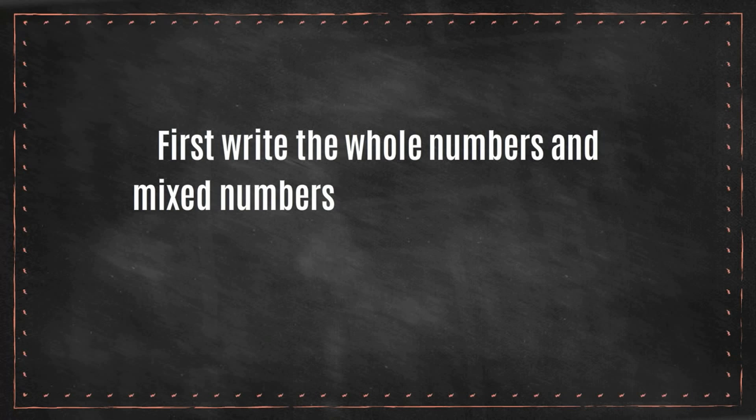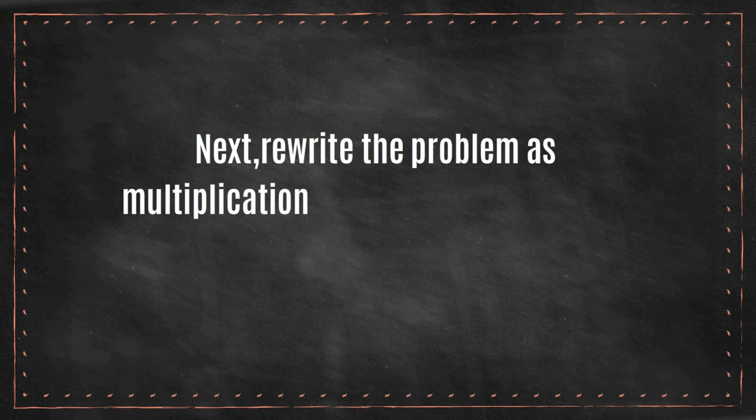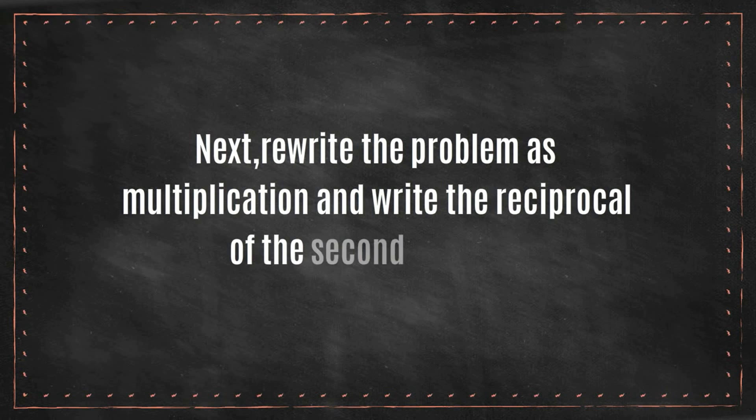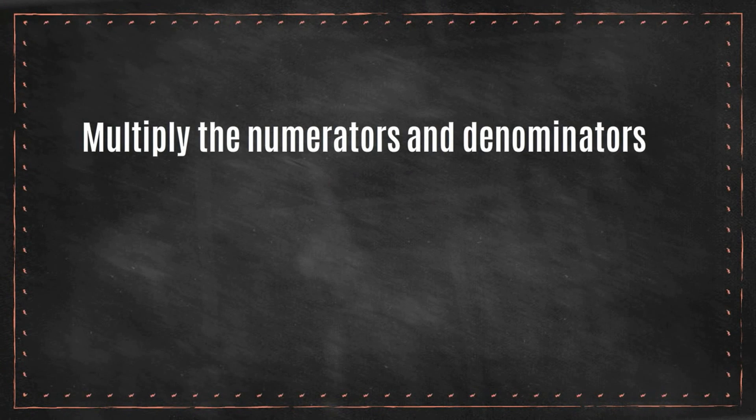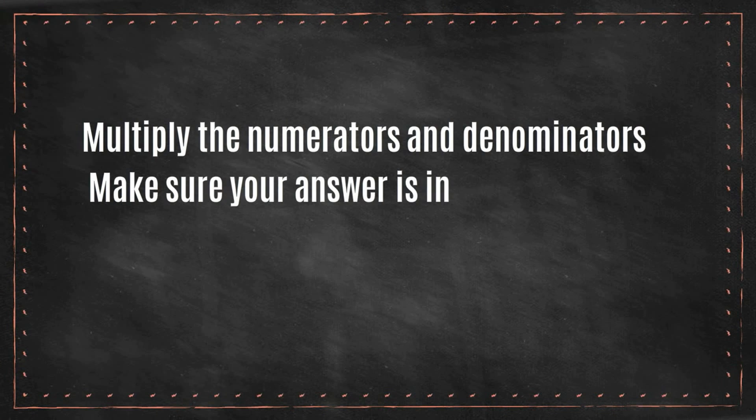First, write the whole numbers and mixed numbers as improper fractions. Next, rewrite the problem as multiplication and write the reciprocal of the second number. Then, multiply the numerators and denominators. Make sure your answer is in simplest form. Let's look at some example problems.